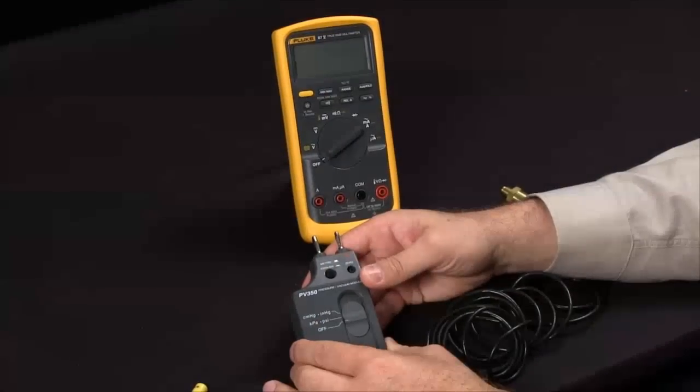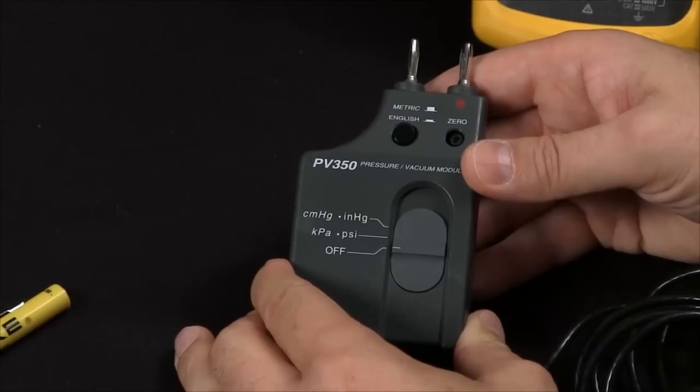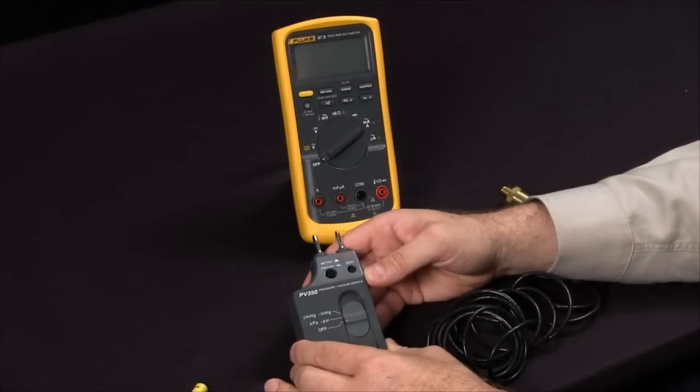Today, I'd like to discuss the operation of the Fluke PV350 pressure and vacuum module, one of the many accessories we have available to extend the capabilities of your Fluke digital multimeter.